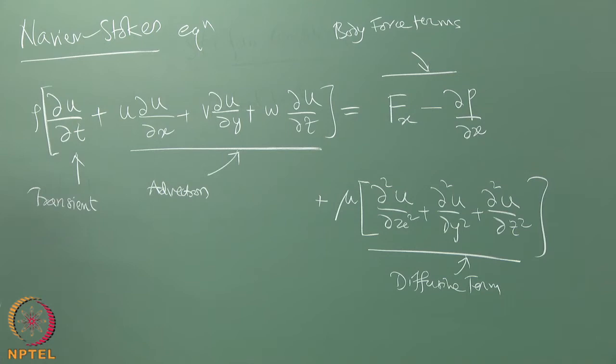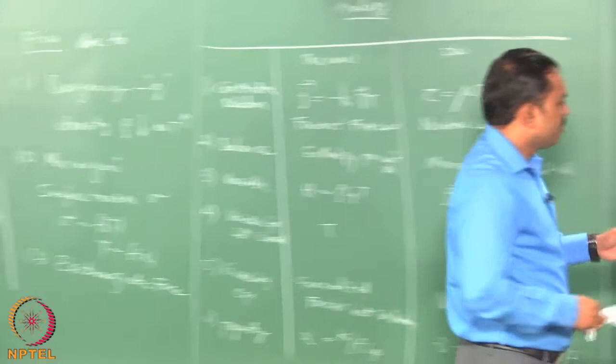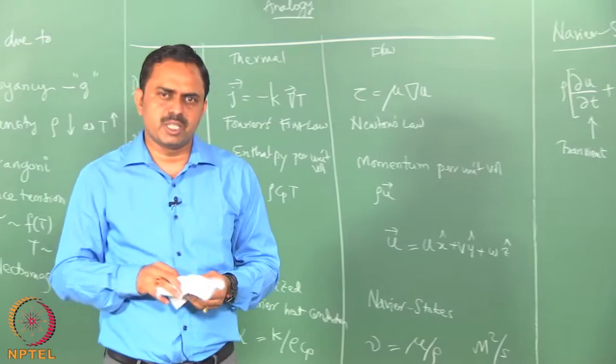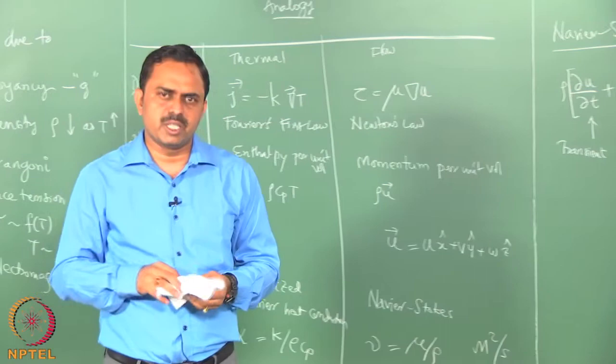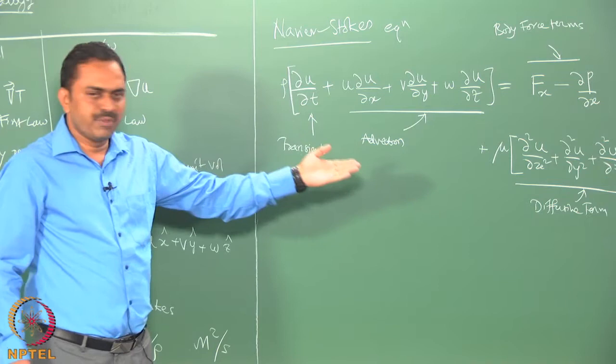Whatever we discussed about the thermal field analogy is applicable for these terms. We can identify: the transient term, the advection term, and the body force or volumetric term. You could combine this equation with the thermal field equation and call this class of equations convective-diffusive equations. When looking for possible solutions, you do not have to look specifically for how to solve the Navier-Stokes equation — you can ask for convection-diffusion type equations, and those solution methods are applicable here as well.